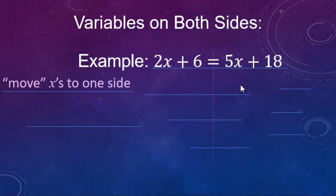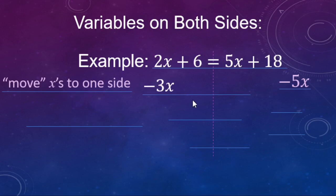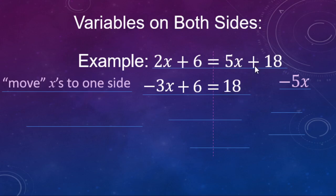In this case, we're going to get the x's off of the right-hand side of the equal sign, so we're going to subtract 5x from both sides. Going left to right, 2x minus 5x makes negative 3x. The plus 6 isn't going to change. On the right side, 5x minus 5x makes zero x's, so we just have the positive 18 there.